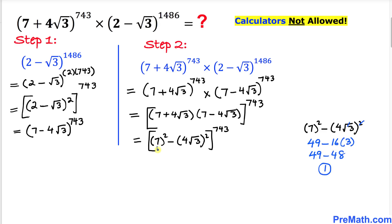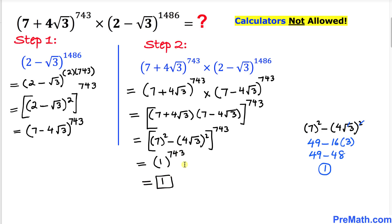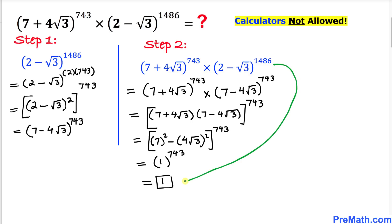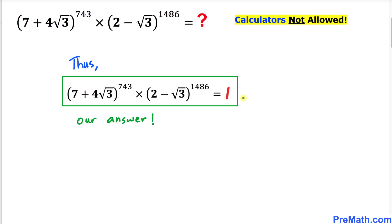So we replace the entire expression with 1, giving us 1^743, which is simply 1. Therefore, this whole expression simplifies to just 1. Our final simplified answer is 1.